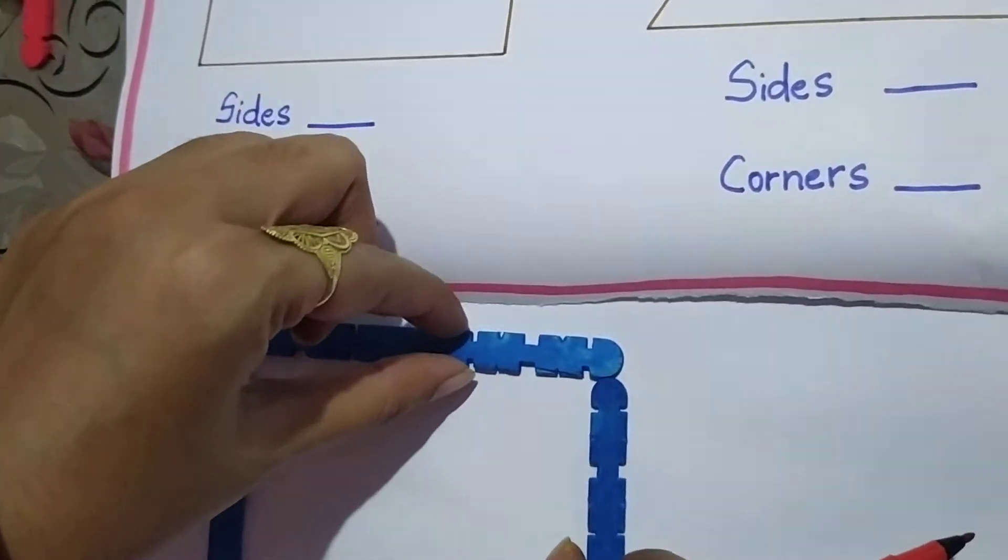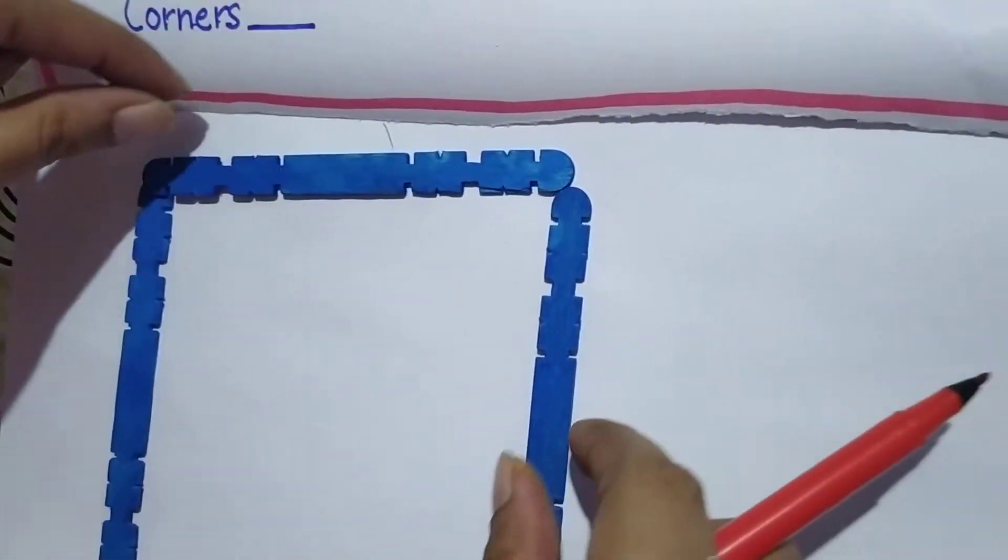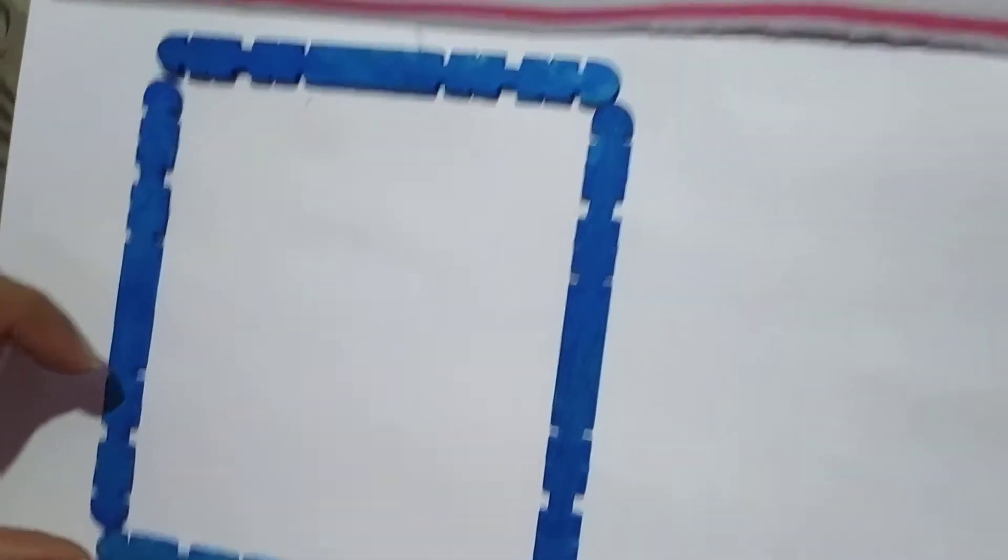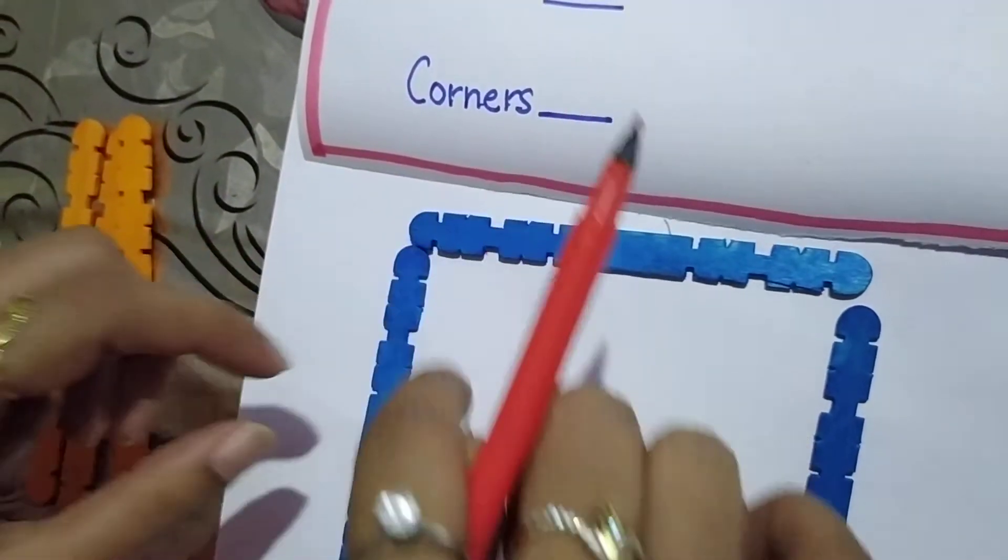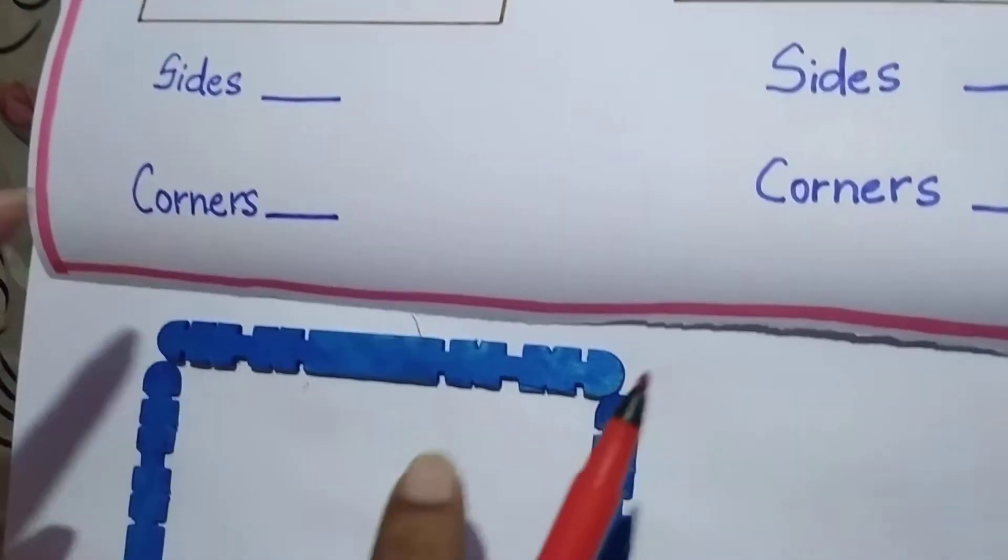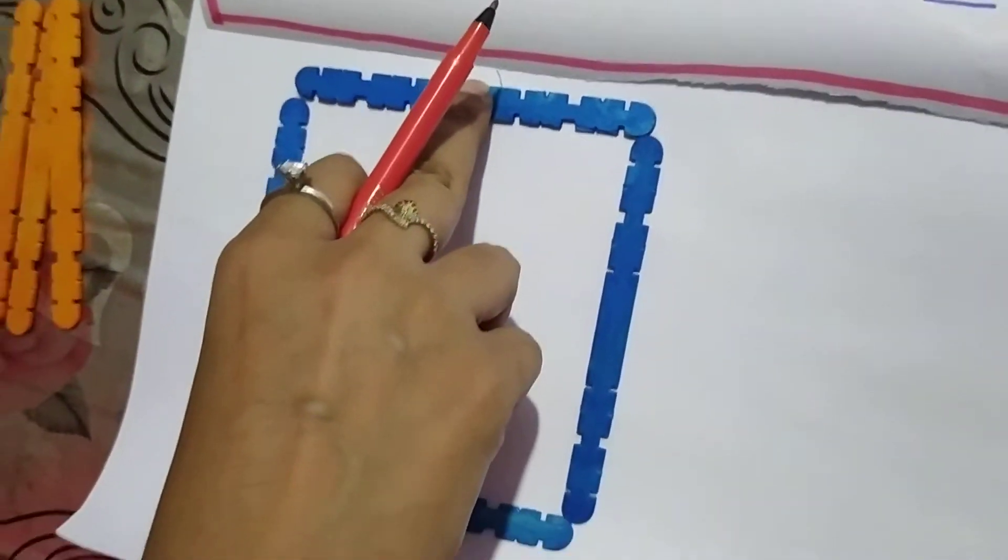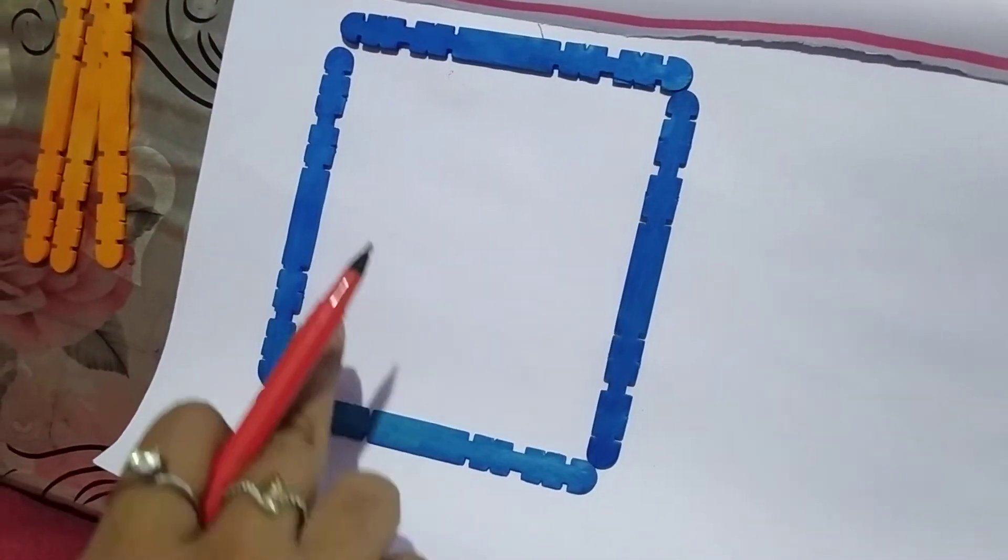And where are these two straight lines joined? Here they are joined. One, two, three and four. So first of all, how many sides will be in this square? One, two, three and four.